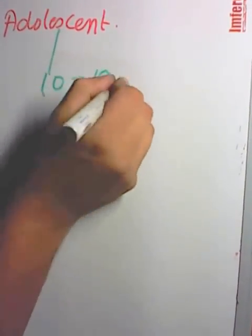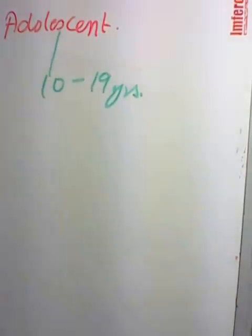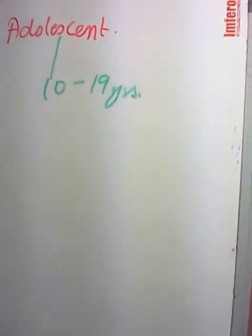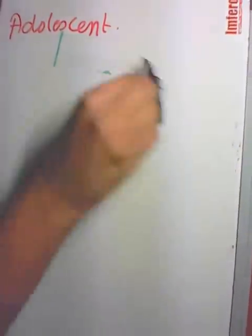WHO defines adolescent as a person between 10 to 19 years of age.